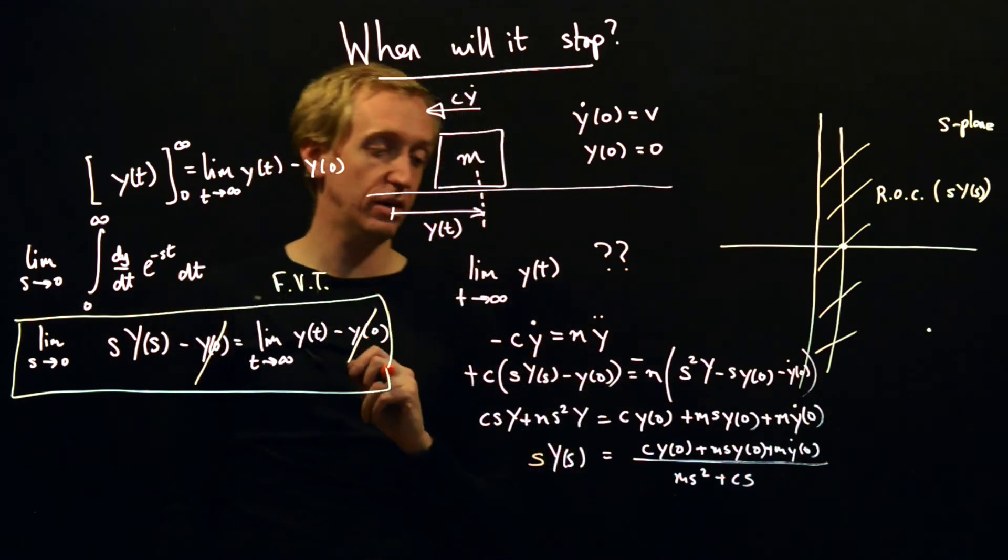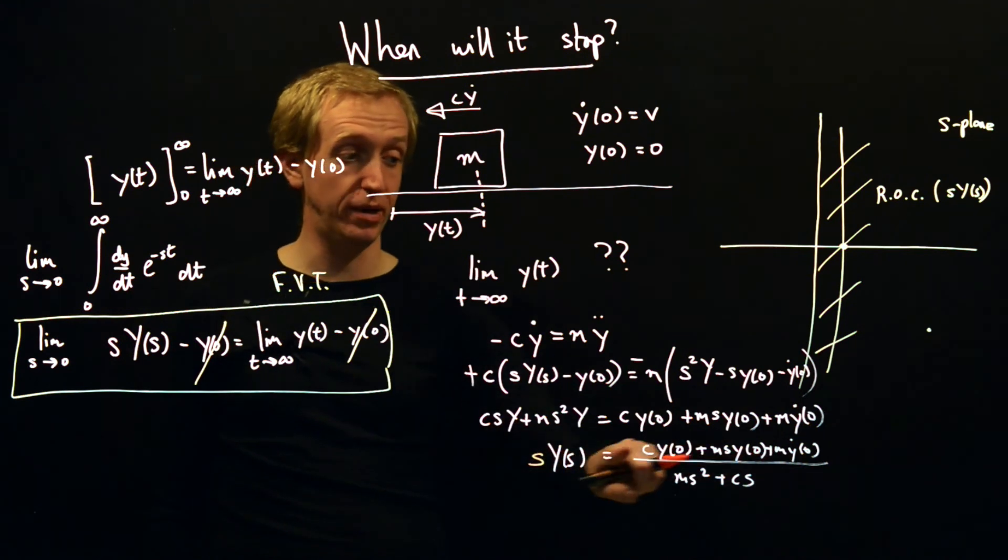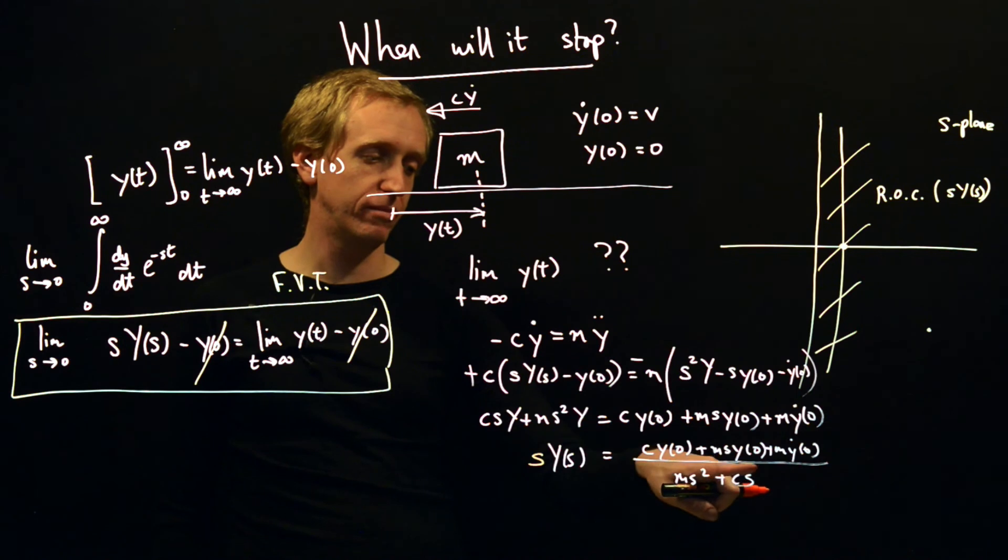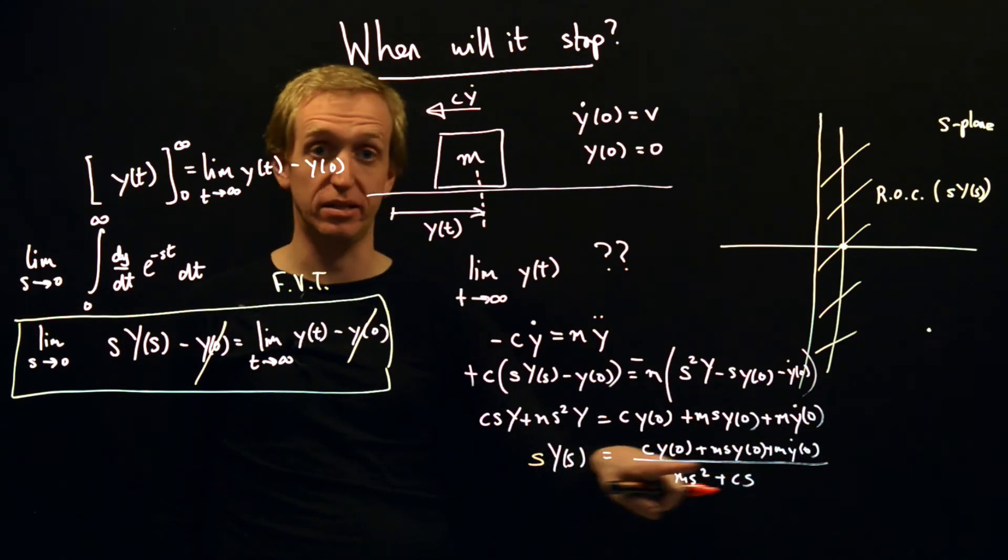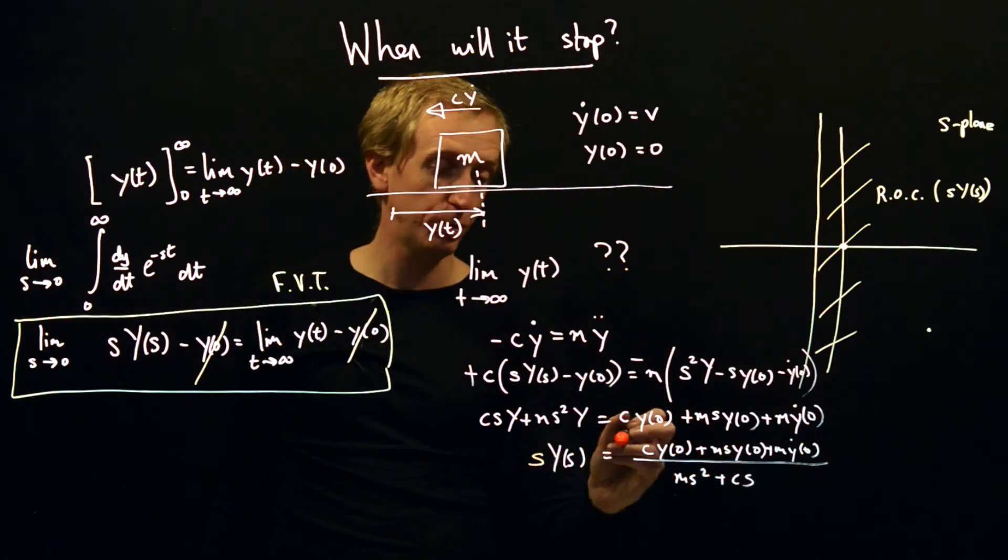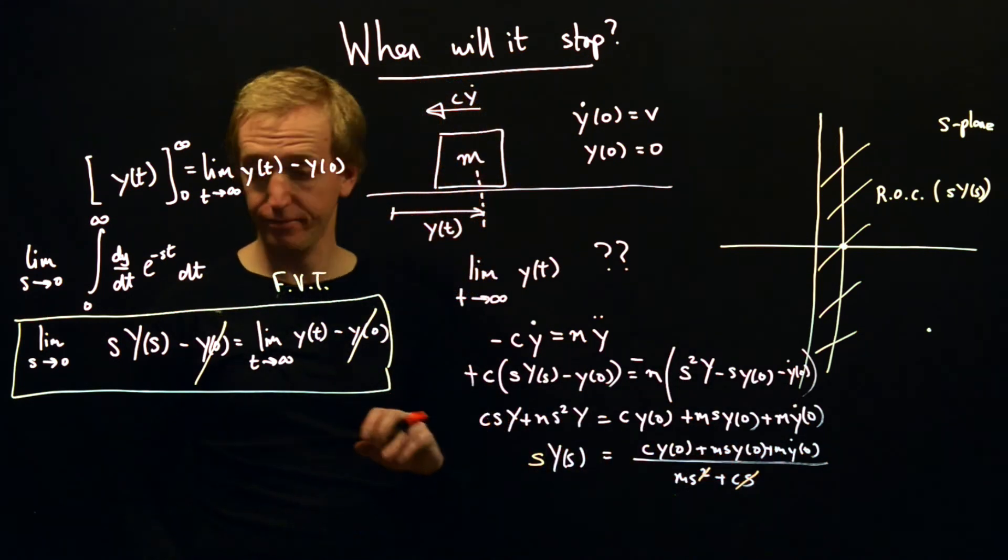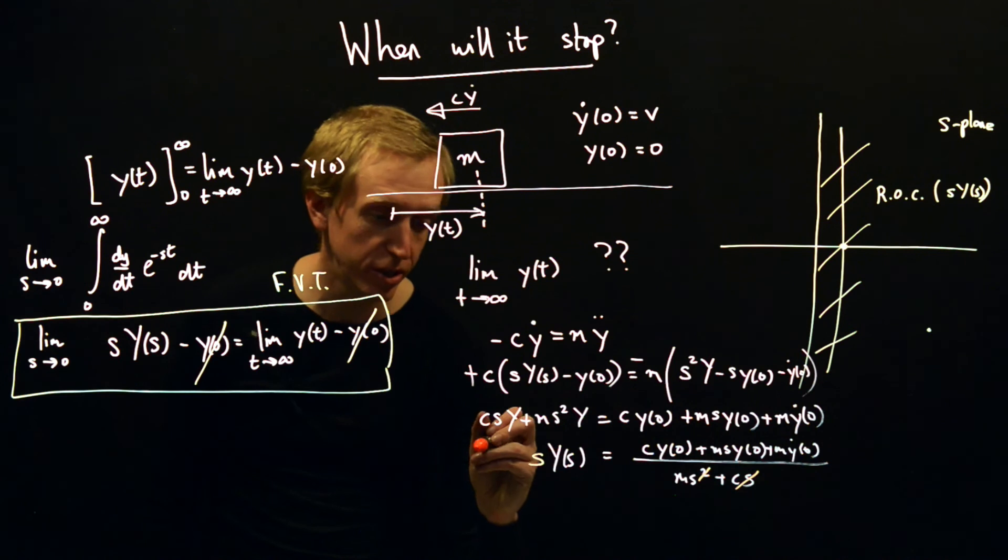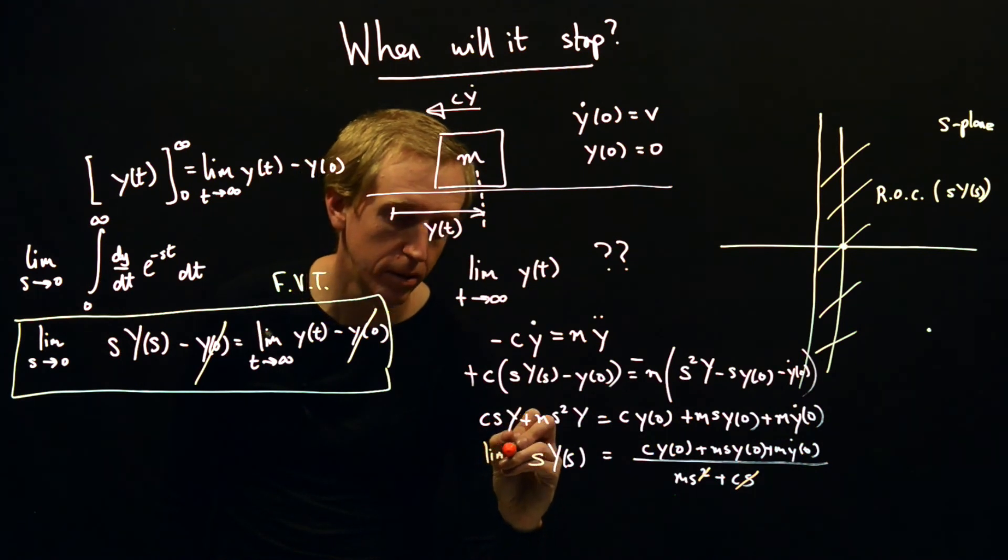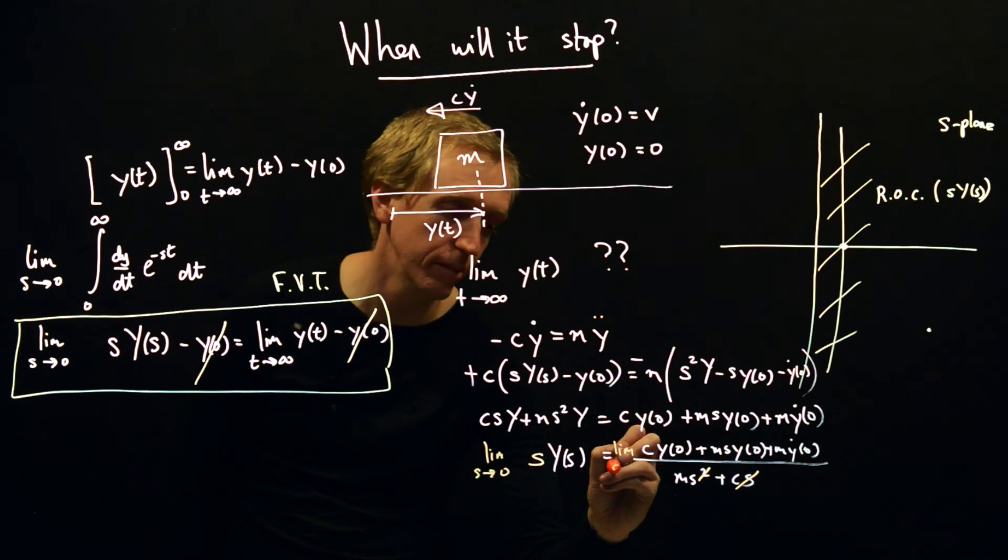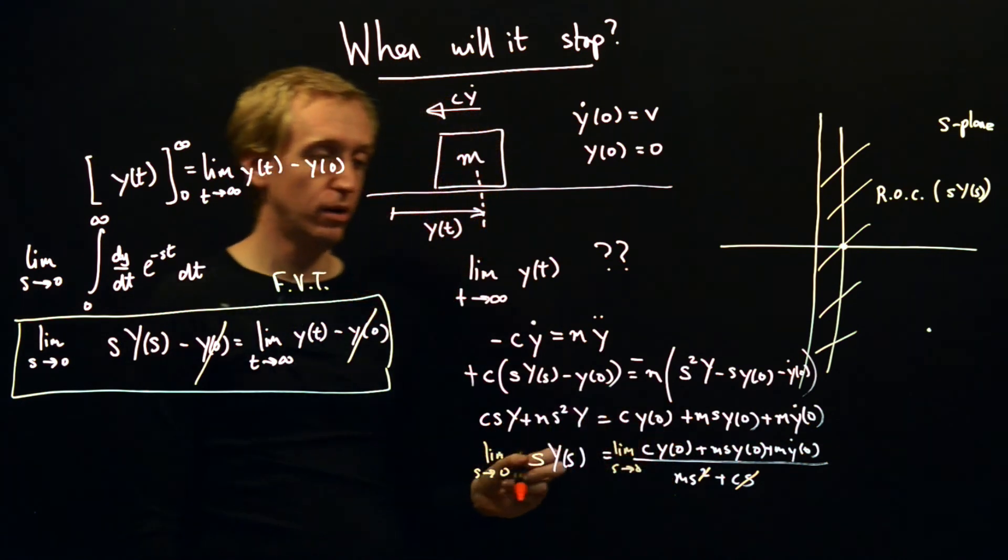So multiplying here by s, and then we just multiply the right hand side by s as well, but actually we've got a common factor of s in the denominator here. So multiplying by s is just the same as getting rid of those terms there, and now we're ready. We just need to take the limit as s goes to zero.